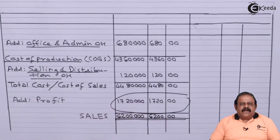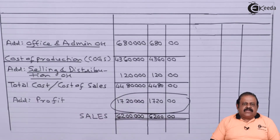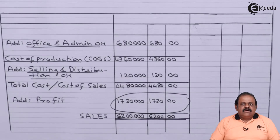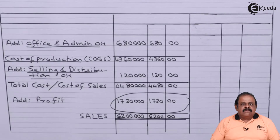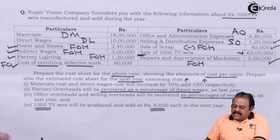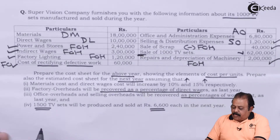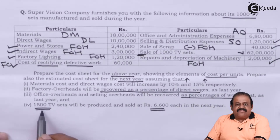So we got total cost, we got sales, and we can get profit as a balancing figure. We have completed the actual cost sheet for the first year. With the help of this we are required to prepare the projected cost sheet for the next year, where there will be production and sale of 1500 units.